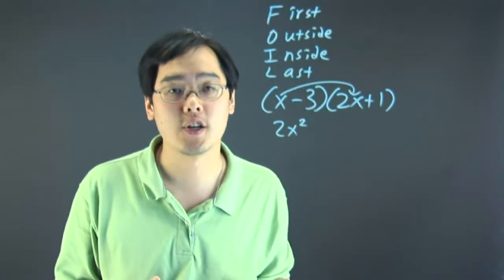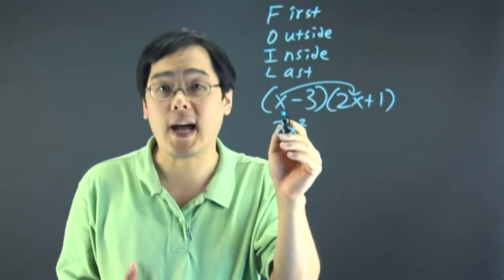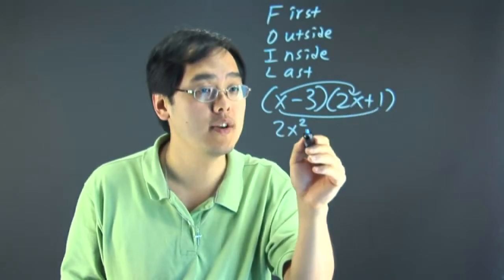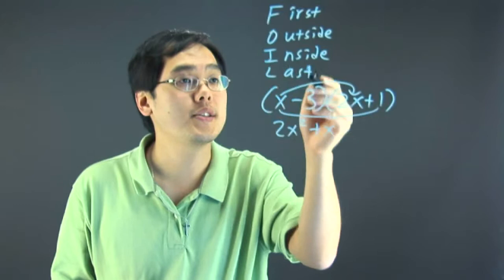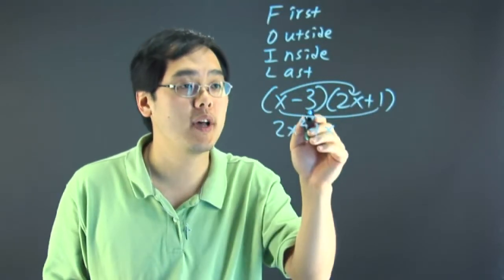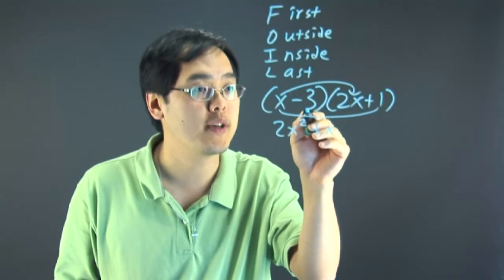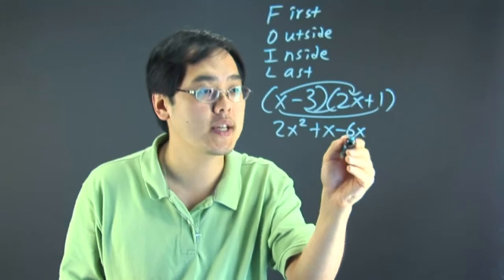The O stands for the outside terms. Now the outside terms are literally outside, the x and the plus 1. So you're going to multiply those two terms together. x times 1 is positive x. And then the I stands for the inside, which means you're going to multiply the interior terms of either parentheses. You're going to multiply the negative 3 with the positive 2x. Negative 3 times 2x is negative 6x.